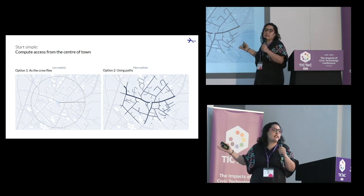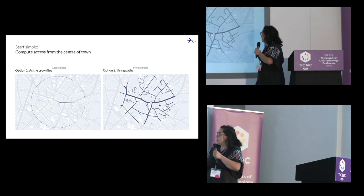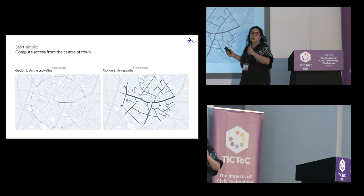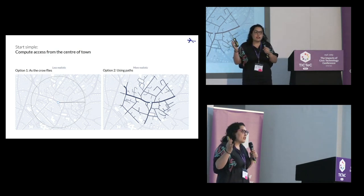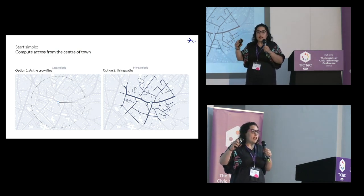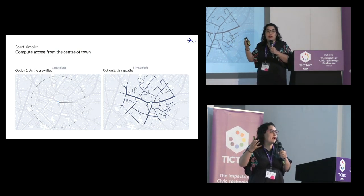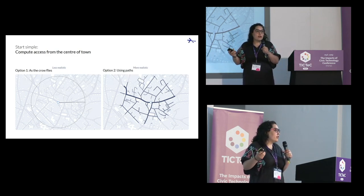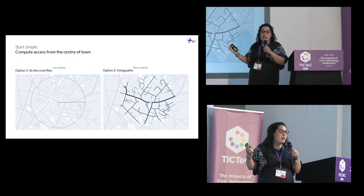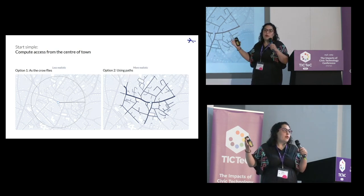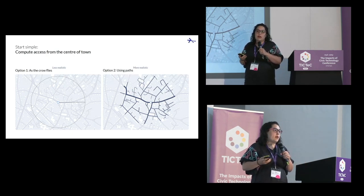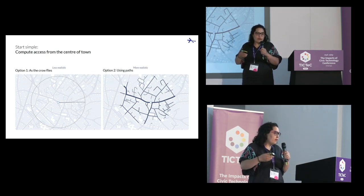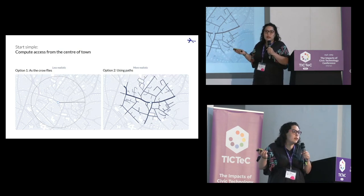A more realistic way would be to actually consider: if I started at this center, where can I reach in 20 minutes? Then use that network and say any supermarket alongside that network counts. Obviously that's going to be a smaller area. And then we can say, in that network we have five supermarkets — tick, we do it.